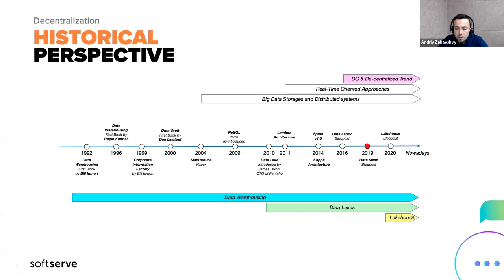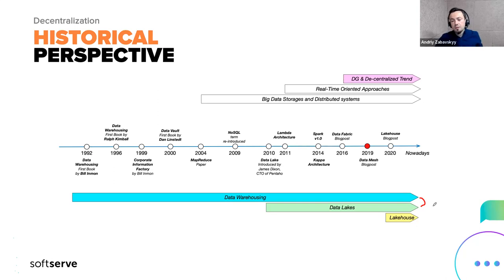Just recently we have the lakehouse concept, which is kind of marrying two worlds — data warehousing plus data lakes — trying to achieve two main characteristics: on the one hand, distributed and really well-scaled big data similar to data lakes, and on the other hand, the best features from the data warehousing world related to well-structured schemas and support for transactions and updates.